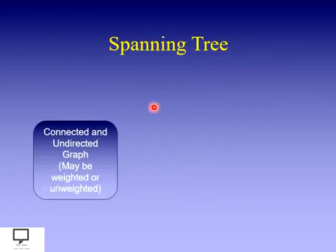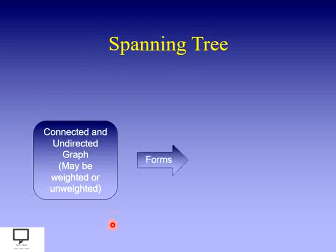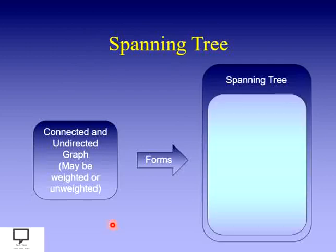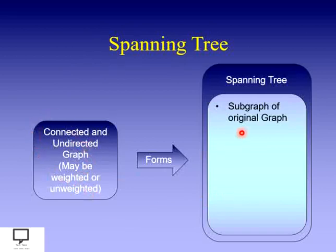We are supposed to take the input as a connected undirected graph that may be weighted or unweighted, and for that we can form the minimum spanning tree. A spanning tree is nothing but a sub-graph of the original graph — whatever graph is given as input, the spanning tree is its sub-graph.